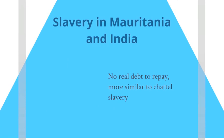In India and Mauritania, the situation of slavery is a bit different — it is closer to chattel slavery, where masters own several slaves. In India, there is a debt, but this debt is never paid off, and oftentimes slaves are born in debt and know they will be in debt until they die.